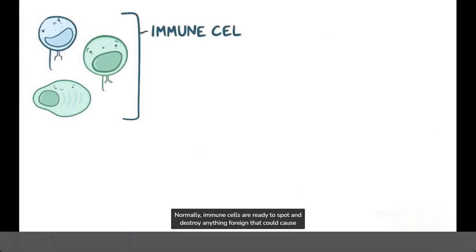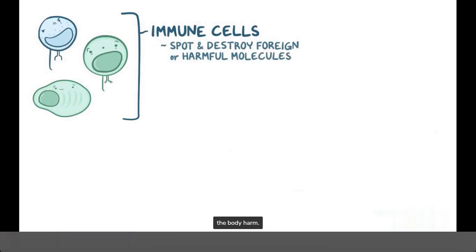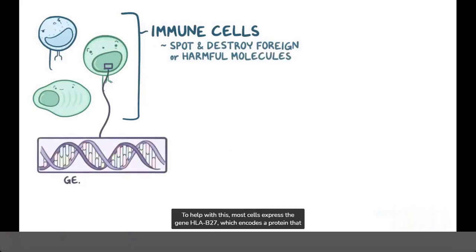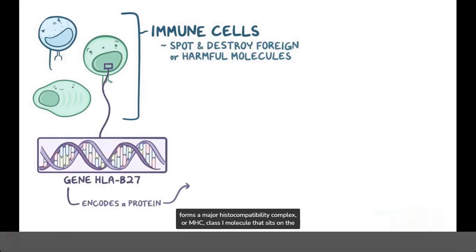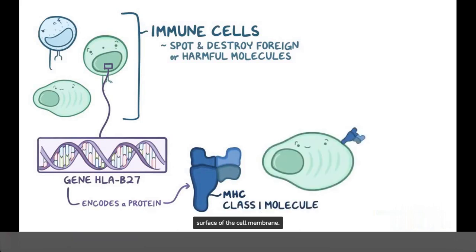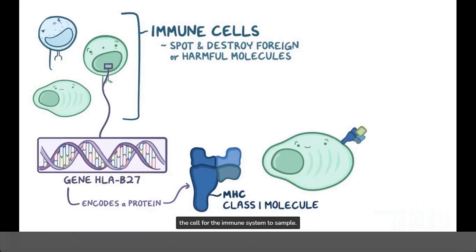Normally, immune cells are ready to spot and destroy anything foreign that could cause the body harm. To help with this, most cells express the gene HLA-B27, which encodes a protein that forms a major histocompatibility complex, or MHC class 1 molecule that sits on the surface of the cell membrane. This MHC class 1 molecule acts like a serving platter, presenting molecules from within the cell for the immune system to sample.